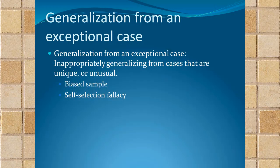The generalization from an exceptional case — this happens when we take a biased sample rather than just a sample that's too small. We pluck from a part of the sample that is not representative. It would be like taking the only green apple in a barrel of red apples and pretending it's representative. So that's a generalization from an exceptional case.